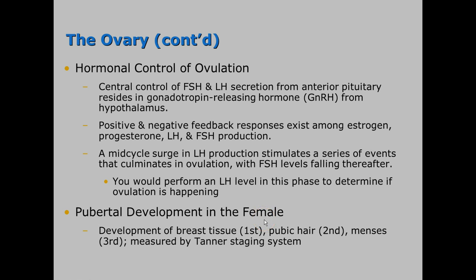There is hormonal control of ovulation. When eggs release, luteinizing hormone drives that. The central control of FSH and LH secretion from the anterior pituitary resides in gonadotropin releasing hormone from the hypothalamus, just as with the male. Positive and negative feedback responses exist — when levels get too high the body lowers them, and when too low it increases them. A mid-cycle surge in LH stimulates a series of events culminating in ovulation, with FSH levels falling thereafter. In the lab, checking an LH level in the luteal phase confirms that ovulation is occurring.